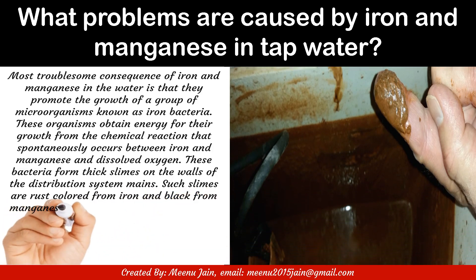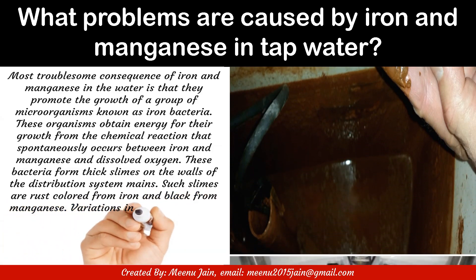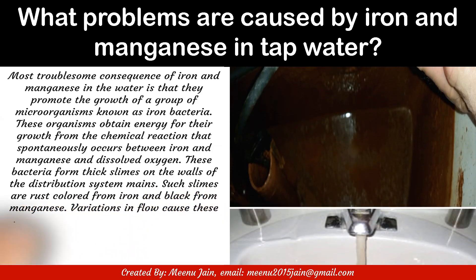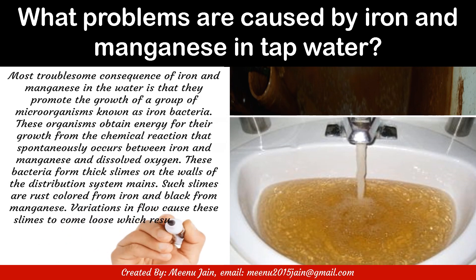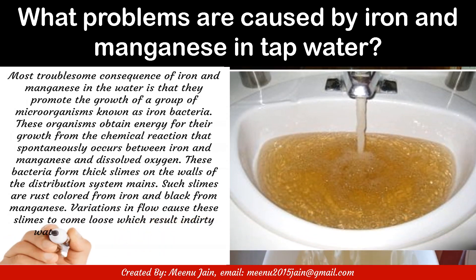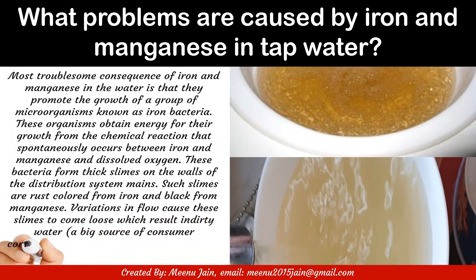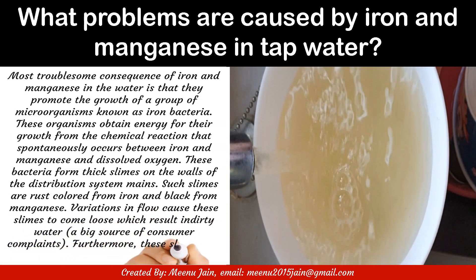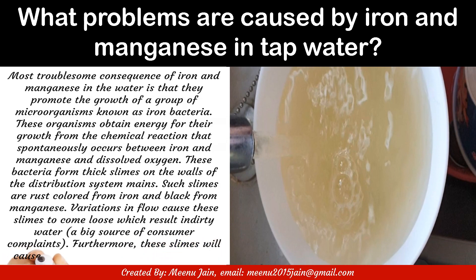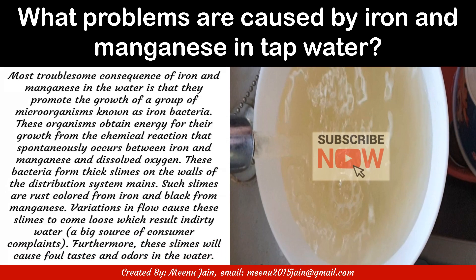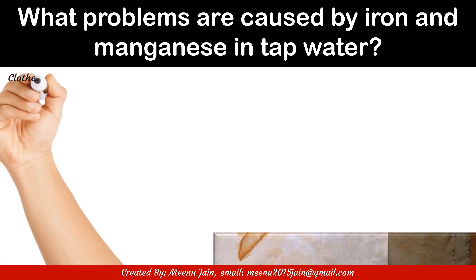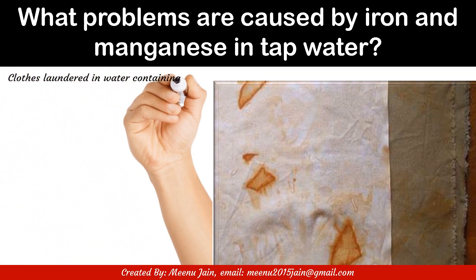These bacteria form thick slimes on the walls of the distribution system mains. Such slimes are rust-colored from iron and black from manganese. Variations in flow cause these slimes to come loose, resulting in dirty water — a big source of consumer complaints. Furthermore, these slimes cause foul tastes and odors in the water.